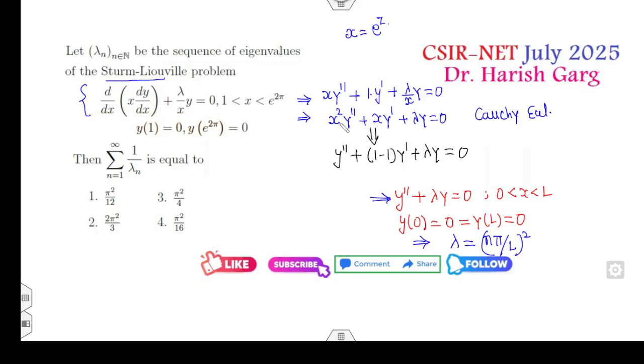Once it's a Cauchy-Euler equation, you can write x = e^z. So that differential equation will change into Y'' + (1-1)Y' + λY. As I told you in my differential equation lecture, whenever you have the differential equation Ax²Y'' + BxY' + CY, this is the Cauchy-Euler equation. After substituting x = e^z, this reduces to AY'' + (B-A)Y' + CY = 0. If you compare them, A is 1, B is 1, C is λ. So it becomes Y'' + λY = 0.